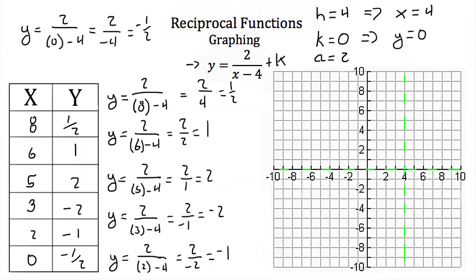So I have my x and y values and I can plot these: (8, 1/2), (6, 1), (5, 2), (3, −2), (2, −1), and (0, −1/2). Now I know this graph has to get closer to these asymptotes, so I'm going to connect these points with a smooth curve, and our graph should look something like that. So now that we know how to graph a reciprocal function, we have completed the tutorial on reciprocal functions.